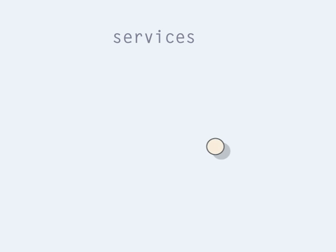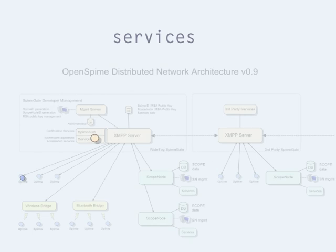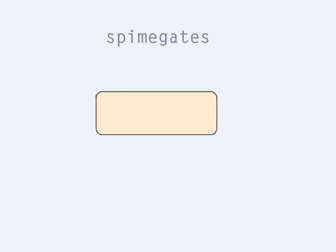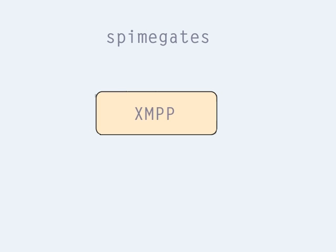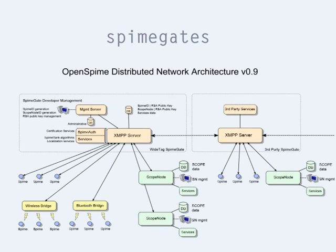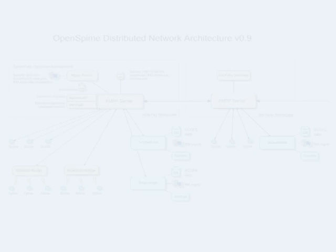Third, there are Services. Services are there to respond to queries of various nature done from other entities. Last but not least, we have SpimeGates, which basically are custom versions of XMPP servers which may provide OpenSpime-related functionalities. With everything brought together, this is what the OpenSpime architecture looks like. For a detailed view and documentation, please do refer to OpenSpime.org.